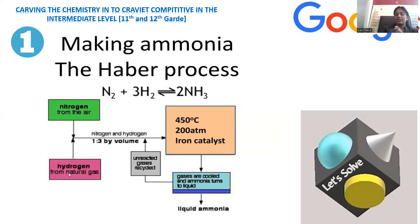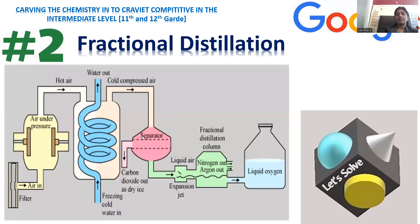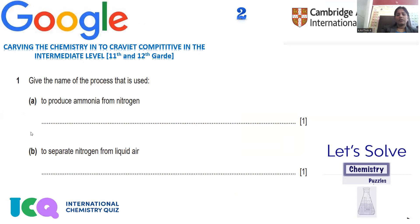In the Haber process, nitrogen is taken from air and hydrogen from natural gas — both from natural sources. They are mixed in a 1:3 (N₂:H₂) ratio by volume, heated at 450°C, 200 atmospheres pressure, with an iron catalyst. The gases are condensed and ammonia is collected as liquid under the high-pressure conditions. This is the well-known Haber process for ammonia synthesis.